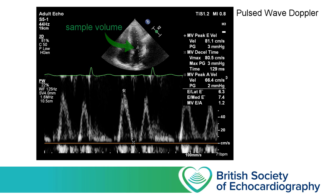Once the ultrasound machine has deduced the velocity of the moving blood and the direction it's travelling — either towards or away from the probe, based on whether the frequency has shifted to a higher or lower frequency — it needs to display that information in a way we can understand. For a single point in space it can create a graph where time is displayed across the x-axis and blood velocity along the y-axis. By convention, blood moving towards the probe is displayed above the baseline and blood moving away from the probe is displayed below the baseline. This technique is referred to as spectral Doppler.